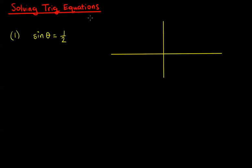What we're going to look at now is solving trig equations, and we're going to do these trig equations with the calculator. Sometimes when they give us particular numbers we can do it without a calculator, but we'll look at that in some later clips. Here's a really simple trig equation: sine of some angle equals a half. You may remember what the particular angle is, but we're just going to look at how to solve it with a calculator anyway.